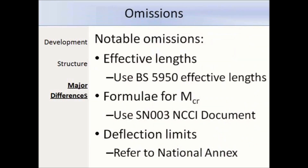There are some notable omissions from the Eurocodes. For the design of compression members, there is no guidance given on how to calculate the effective length — I would recommend using the ones given in BS 5950. There is no guidance on how to calculate the critical moment, Mcr, for the design of unrestrained beams, so you'll have to refer to the NCCI document — Non-Contradictory Complementary Information — specifically document SN003, available from the Access Steel website. Another omission is deflection limits, but the UK National Annex provides a table of vertical and horizontal limits which you should refer to.